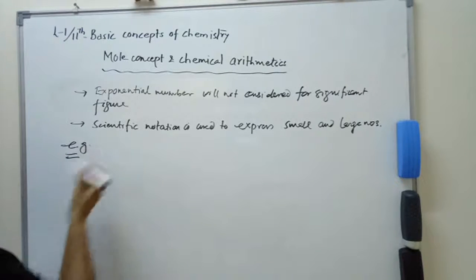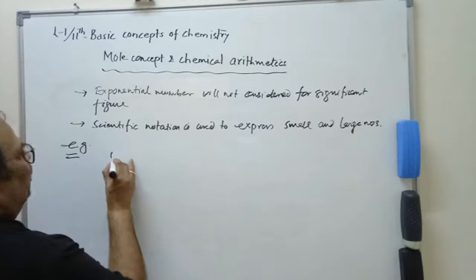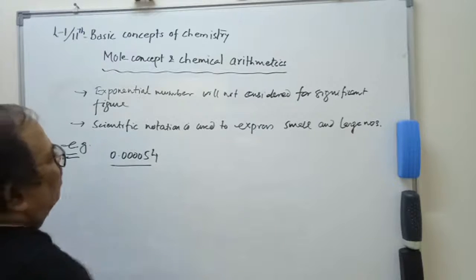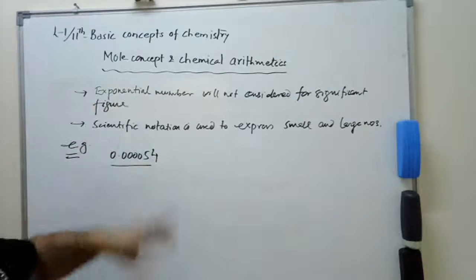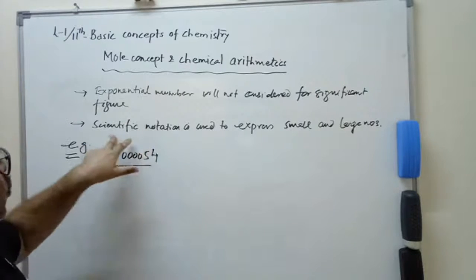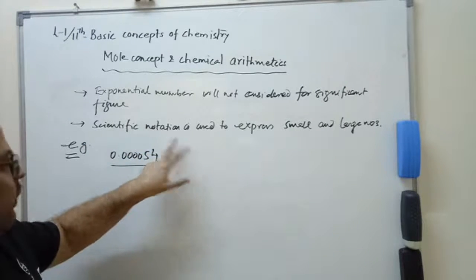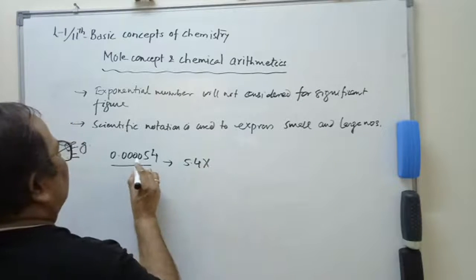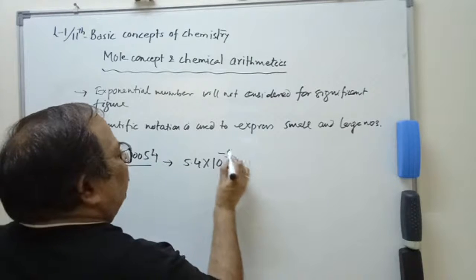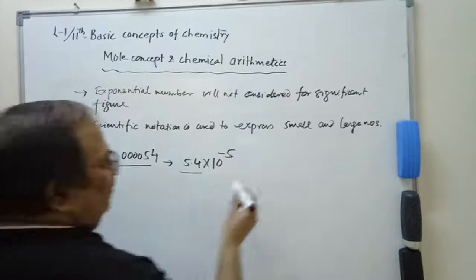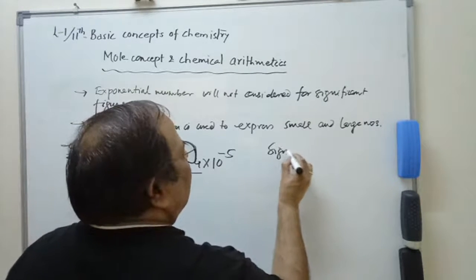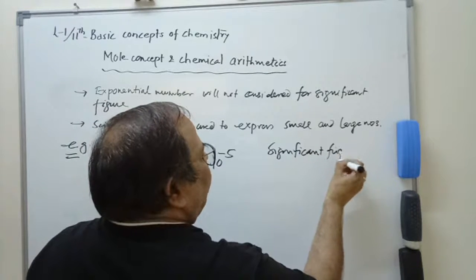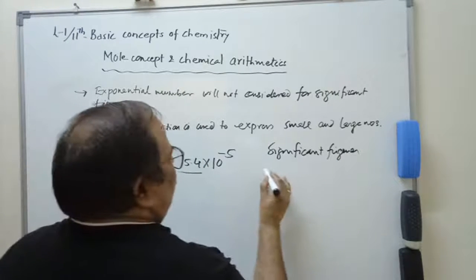Let's see some more examples useful for understanding significant figures. The number is 0.000054. We should convert it into scientific notation. This will be equal to 5.4 into 10 to the power minus 5. How many significant figures? Two — only 5 and 4 are counted.